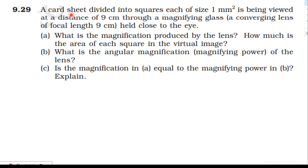From the topic ray optics and optical instruments: a court sheet divided into squares each of size 1 millimeter square is being viewed at a distance of 9 centimeter through a magnifying glass — a converging lens of focal length 10 centimeter — held close to the eye. What is the magnification produced by the lens? How much is the area of each square in the virtual image? What is the angular magnification of the lens? Is the magnification equal to the magnifying power?